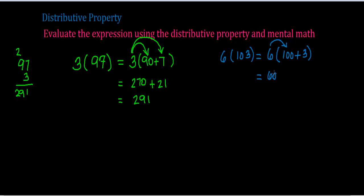6 times 100 is 600. I have a plus, so bring down that plus. Then 6 times 3, that gives you 18. And then you simply add 600 and 18, and there's your answer.